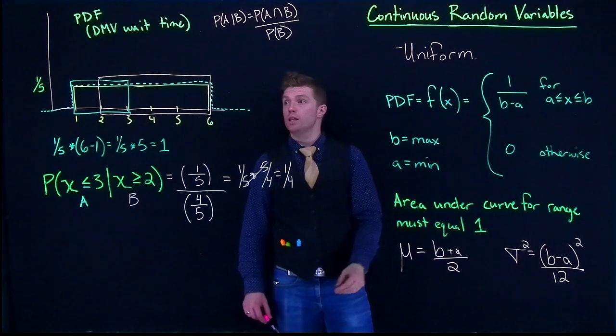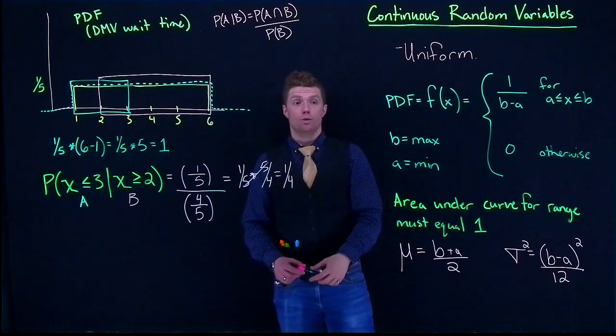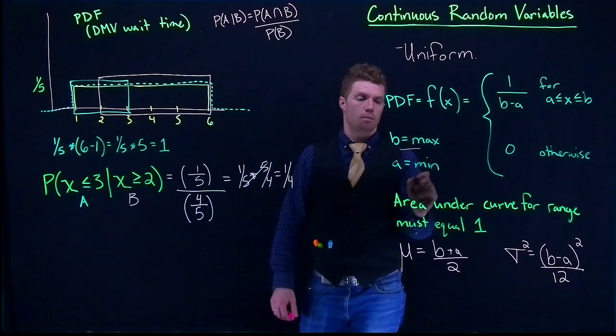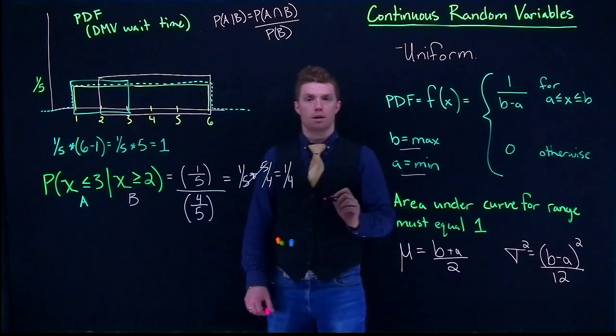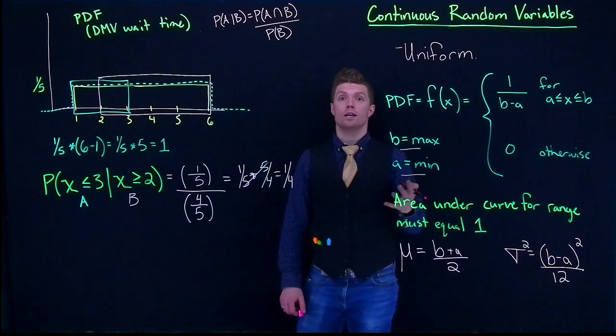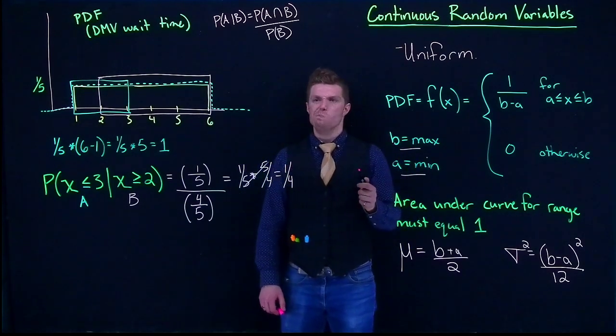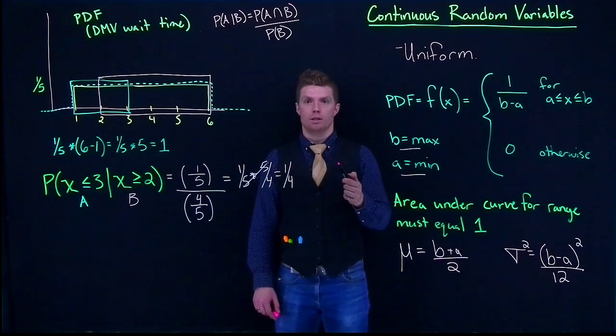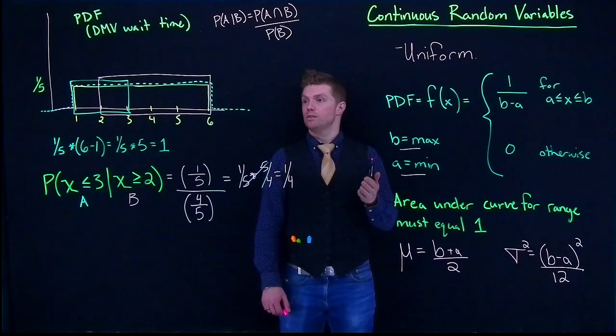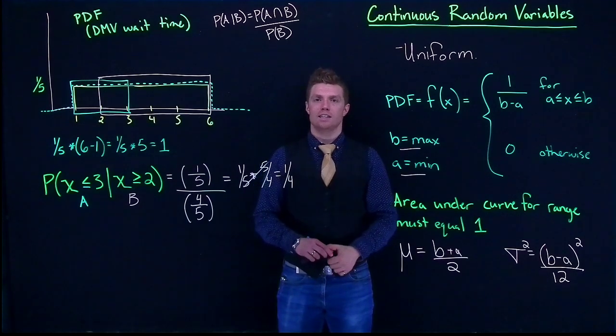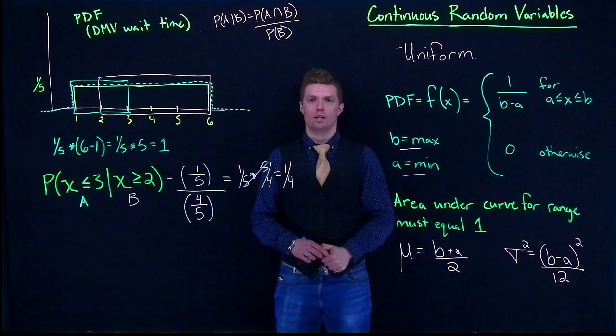If we look at all of this, really we can fully define a uniform distribution by just our maximum and our minimum. If we're given those two things and we know that it's uniform, we can fully define a continuous random variable that is uniformly distributed. That's it. And we will continue on talking about other continuous random variables in future videos.